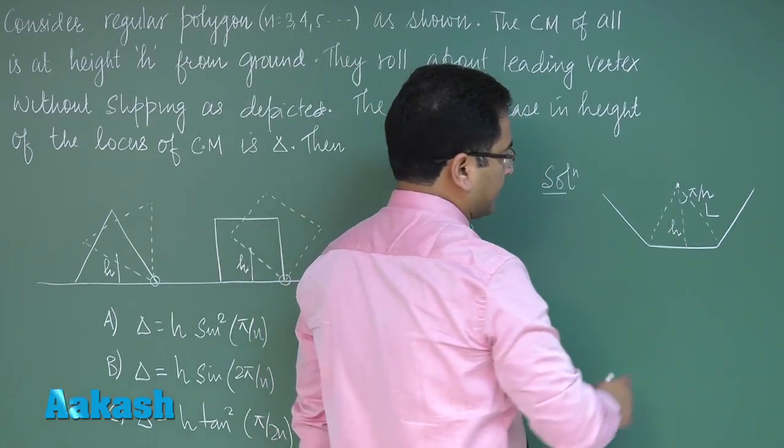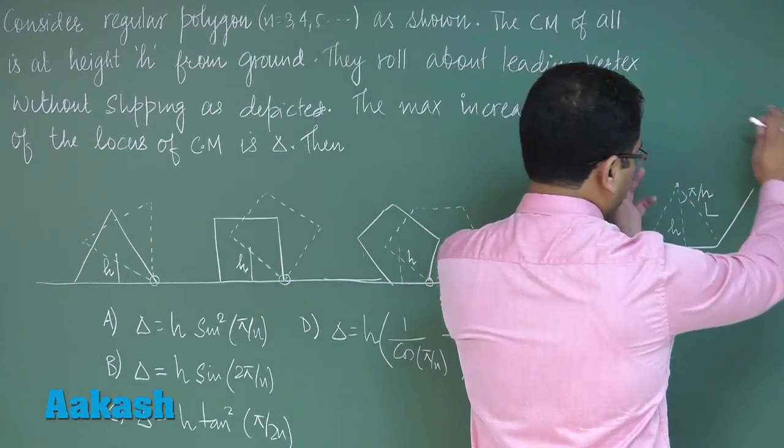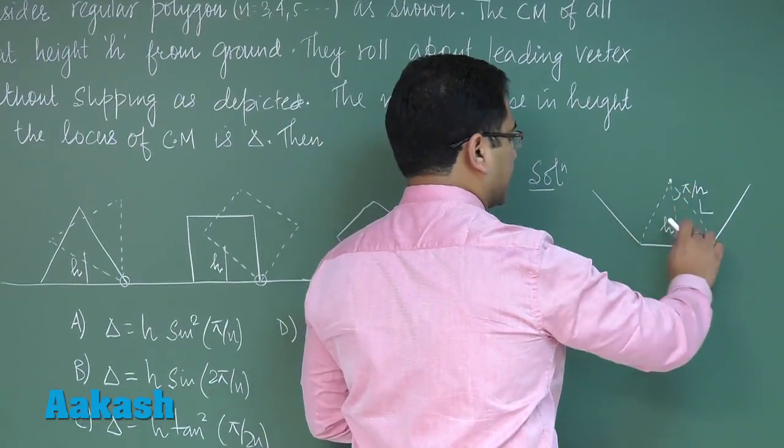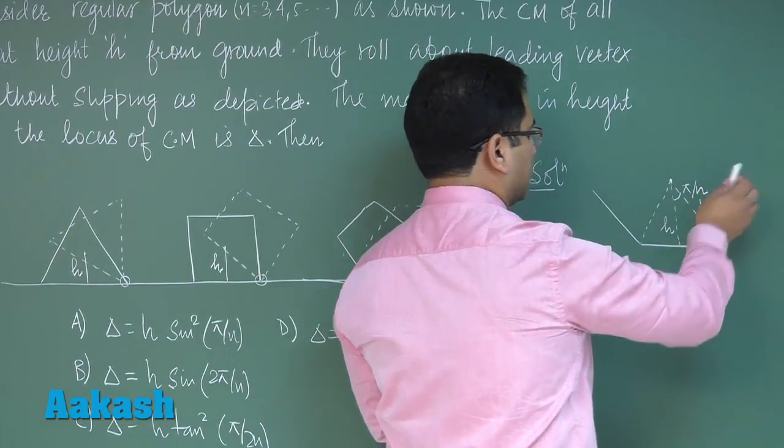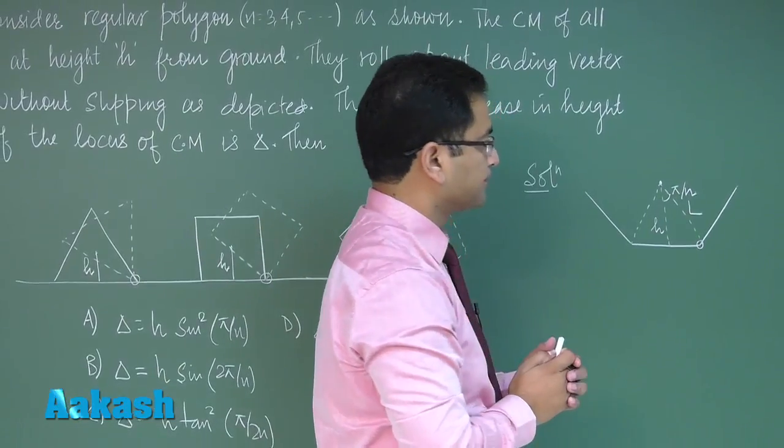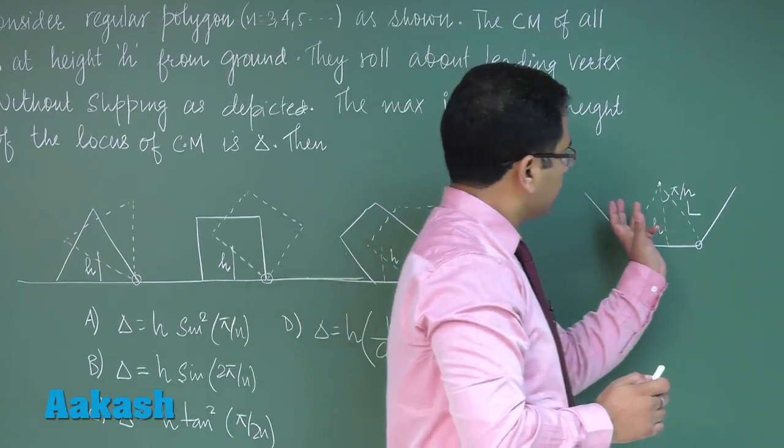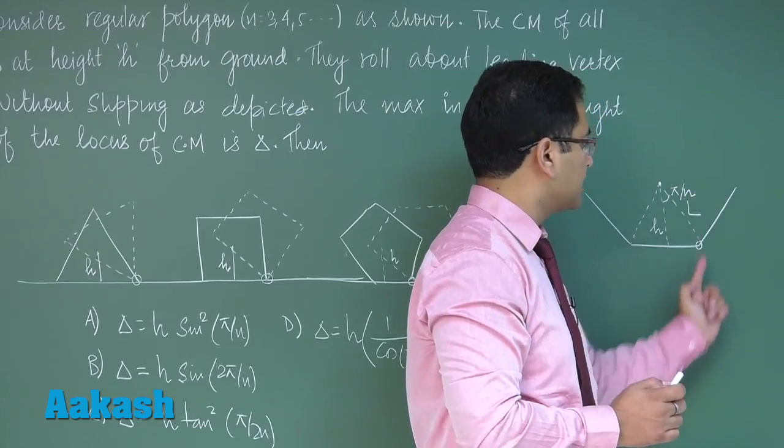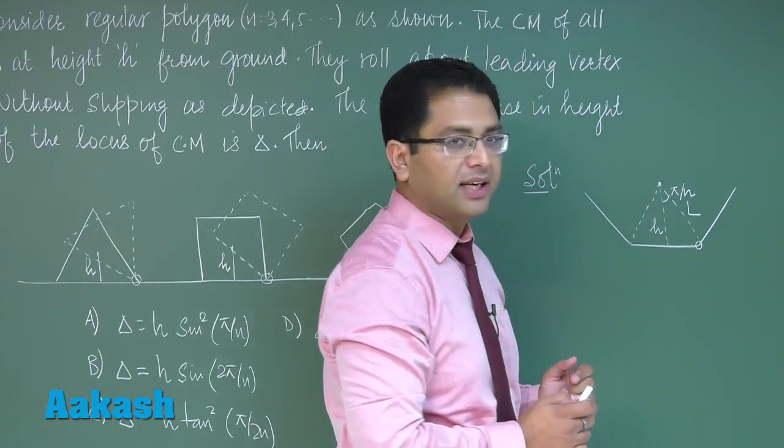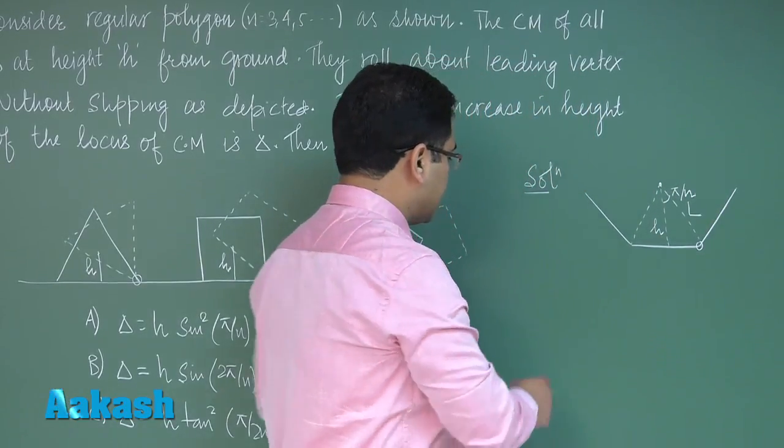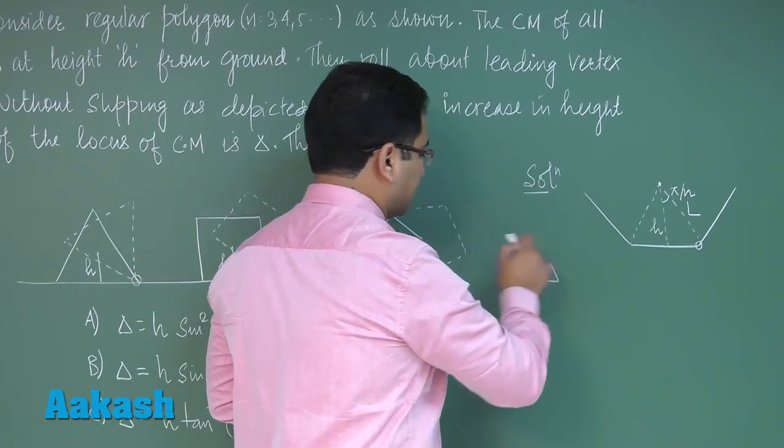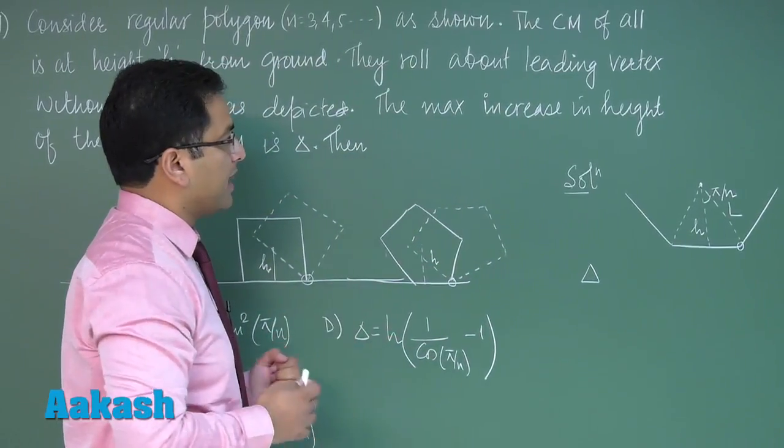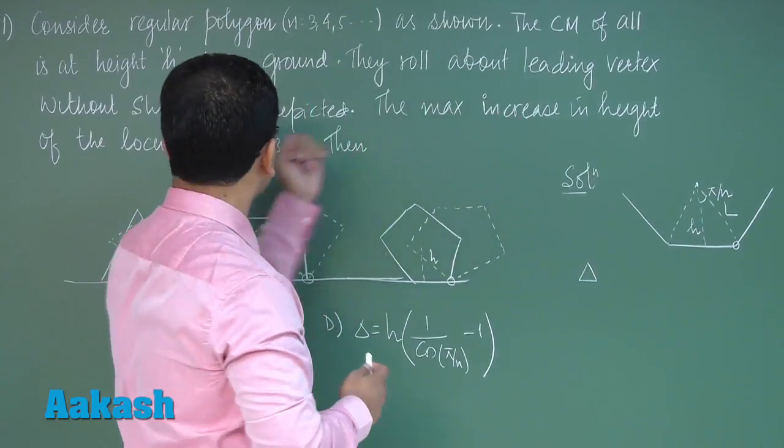This angle would straightforward be π by n. Now just try to imagine when this polygon rolls about this particular thing, then the center will make a circle of radius l. The maximum height from the center, the vertical distance, would be l, which is very evident.